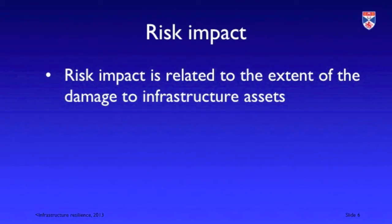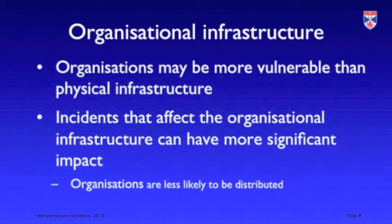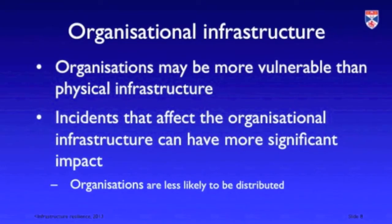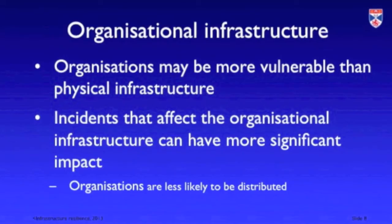When we talk about impact, we mean how much disruption is caused by some event, and that disruption depends on the type of event. If we have a storm in an area that causes flooding, that causes a great deal of local disruption, but the effect on the national infrastructure is generally not that great — unless there happens to be some critical network affected by that flooding. Incidents that affect organizational infrastructure tend to have a greater effect because that organizational infrastructure is not so distributed.